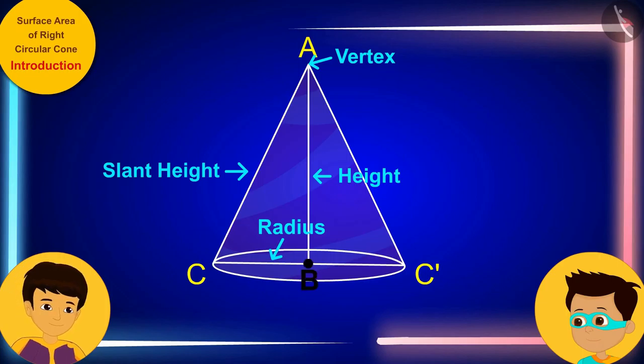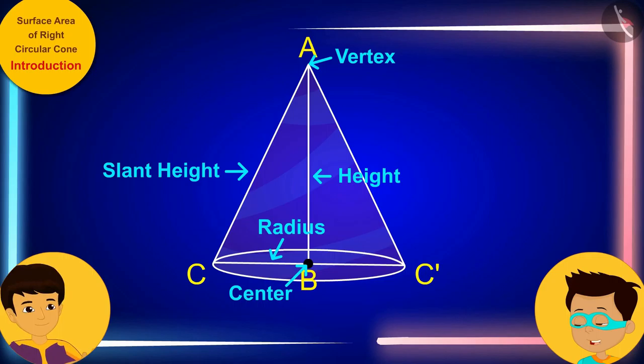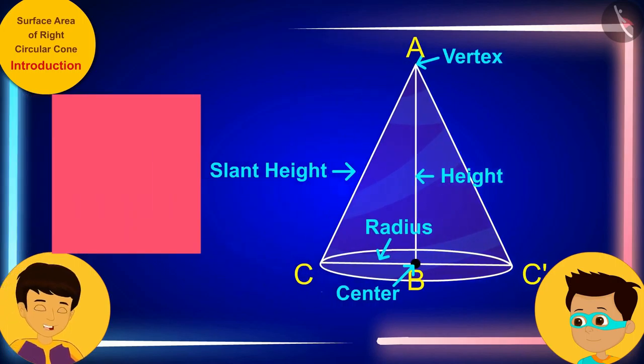And here, B is the center of the base which is circular in shape. I understood all this. But how does this relate to the paper used in my hats?